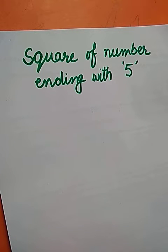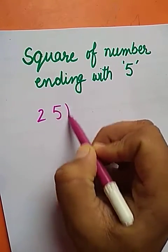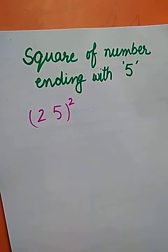Let us today learn how to find the square of a number that ends with 5. Let us have the number, say 25. Now to find the square of 25, we have to apply a simple trick.